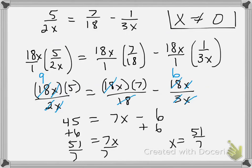My final check here is to make sure I have not gotten the solution that I originally excluded. Well, clearly 51 over 7 is not 0, so we're good. We have our answer, x equals 51 over 7.